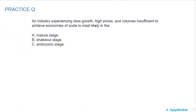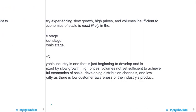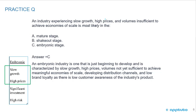Another question: An industry experiencing slow growth, high prices, and volumes insufficient to achieve economies of scale is most likely in A, the mature stage; B, the shakeout stage; or C, the embryonic stage? The high prices and slow growth should give it away. C is correct.